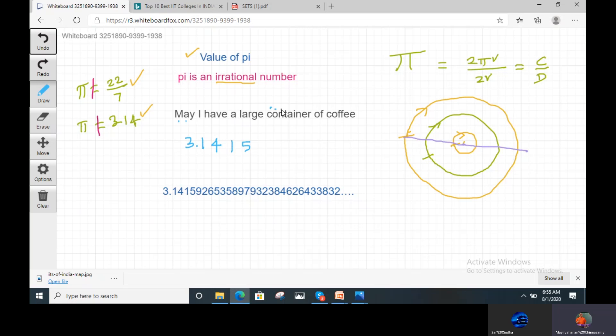Container, count it. 1, 2, 3, 4, 5, 6, 7, 8, 9. So you put 9. Of, put 2. Coffee, 1, 2, 3, 4, 5, 6. So these are the values.